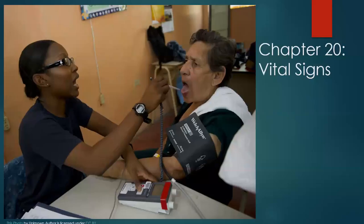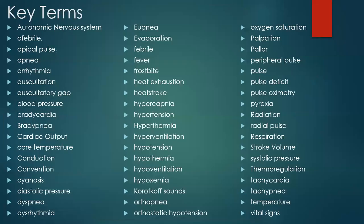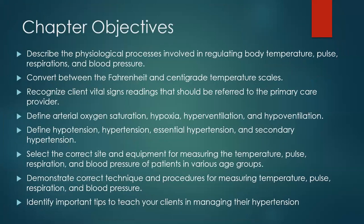Welcome. This is your Vital Signs lecture. It is chapter 20 in your Eccles Davis book. These are key terms — you can find your key terms in the Momentum site. These are the chapter objectives. You definitely want to review these and make sure that you can speak to each of them.